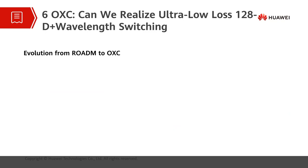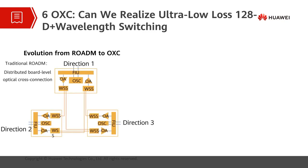The ROADM technology has been popularized in optical networks and can meet the requirements for flexible grooming of large granularity services at the optical layer. So if we already have ROADM, why do we still need OXC? Traditional ROADM uses distributed board-level optical cross-connection. In one direction, multiple boards need to be configured, including the FRU board, OA board, optical monitoring board, and the most important WSS board. There are many internal fiber connections between these boards.